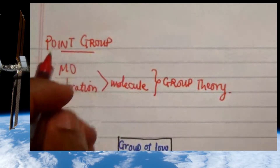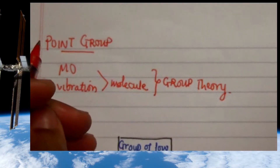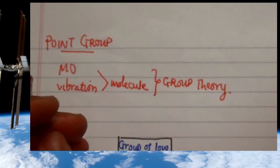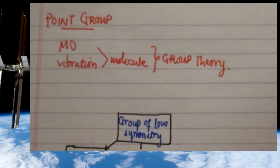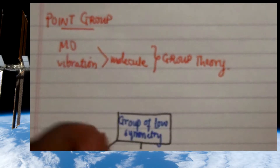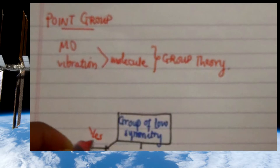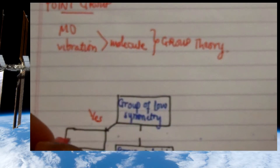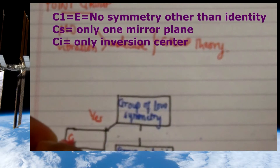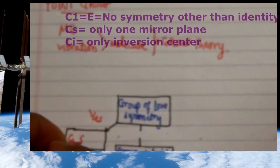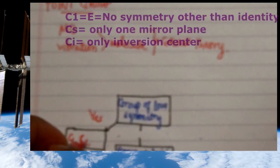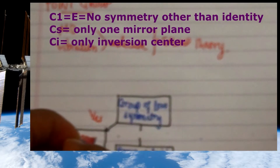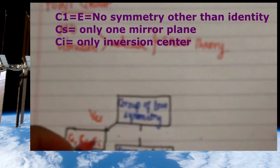Now let's look at the steps we can use to identify the point group of a particular molecule. First, we need to understand that if you have a low symmetry molecule, you will most likely be in the category of C1, which is the same as an identity; or Cs, which is when you have only one mirror plane; or Ci, which means you have an inversion center.